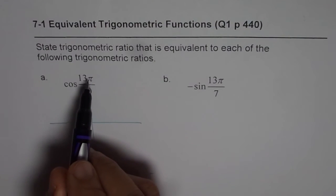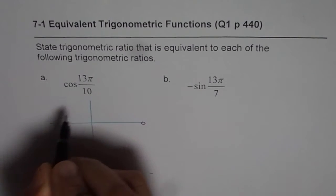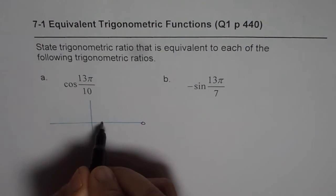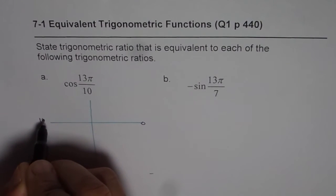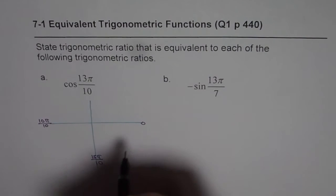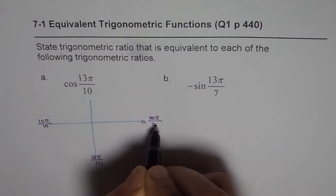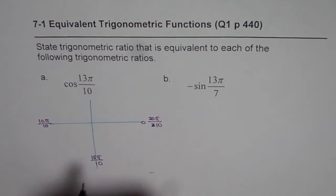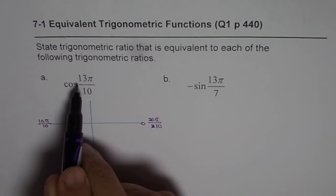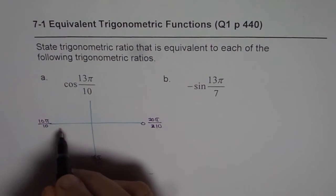Cos 13π by 10. That means 0. If I am dividing this π in 10 portions, here I will have 10π by 10. Here we will have 15π by 10. And then we will have 20π by 10. That is a very interesting way of writing. So that clearly you can get where is 13π by 10.